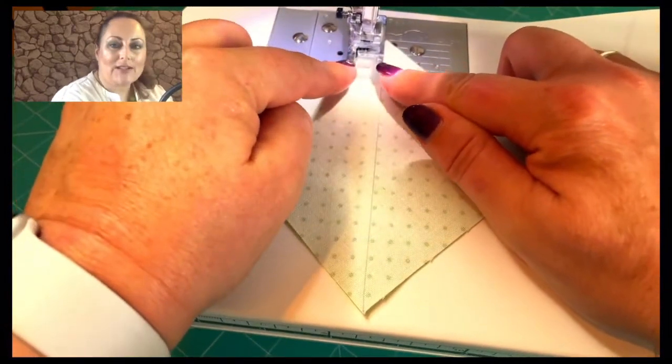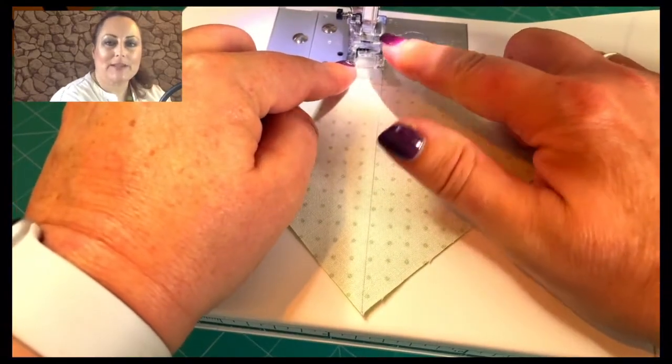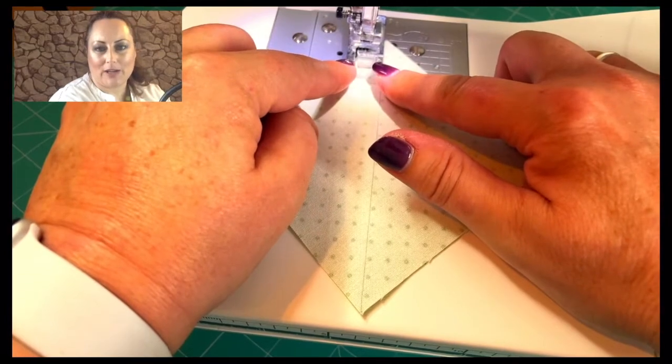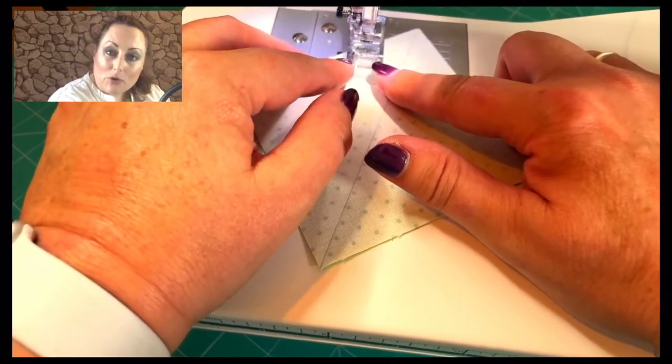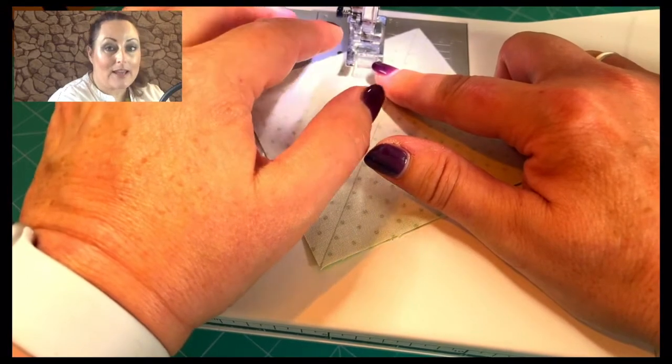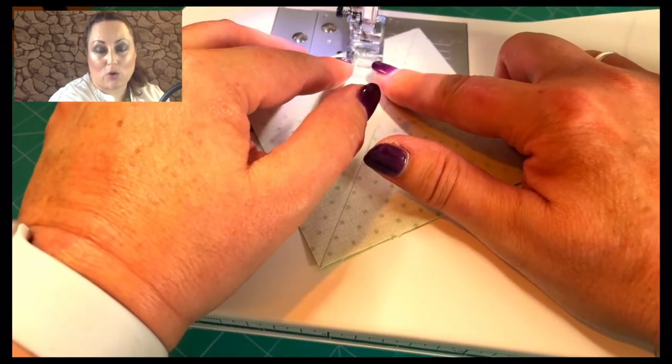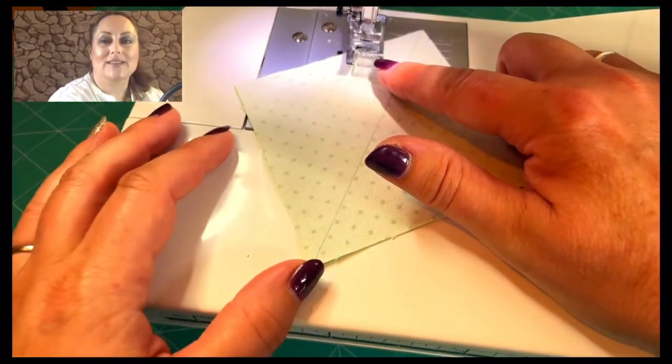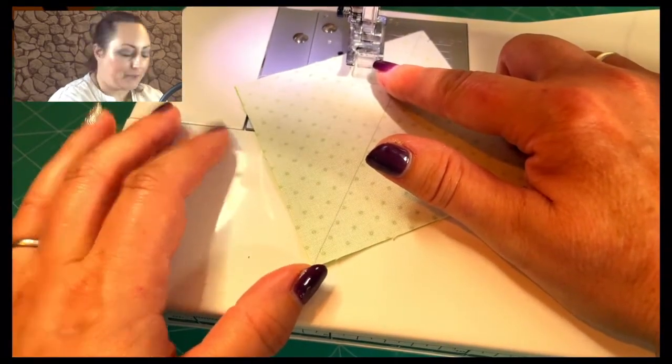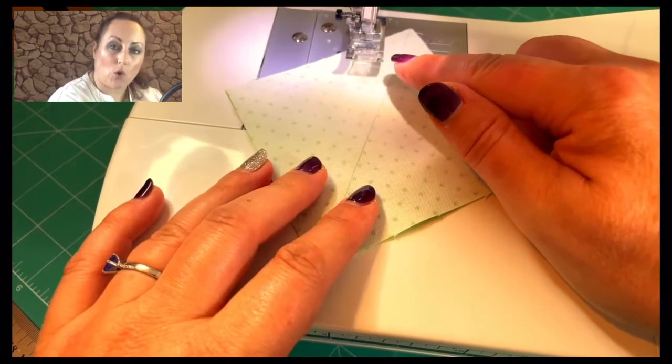Now you'll notice here I've got a standard foot on this machine. That's because my machine does an automatic quarter inch foot or it's got a setting for a quarter inch seam. So check with your machine because the instructions, because you may find that you've got a quarter inch seam already built in. If not, you'll have to use your standard quarter inch piecing foot. But either way, we want to sew with a quarter inch seam.